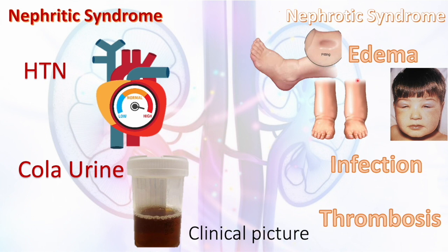We're also losing antithrombin 3, an important anticoagulant protein. Antithrombin 3 inhibits active factor 10, so losing it creates a hypercoagulable state and high risk of thrombosis. A high-yield scenario: a patient with longstanding nephrotic syndrome who suddenly develops hematuria — you must suspect renal vein thrombosis. This question has been repeated frequently on USMLE.